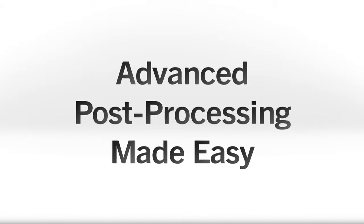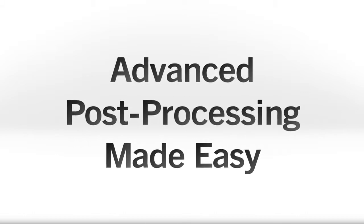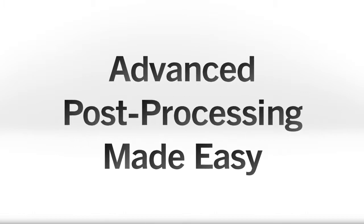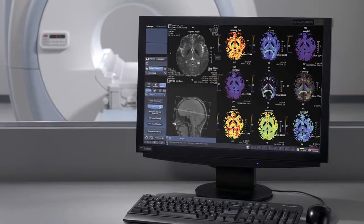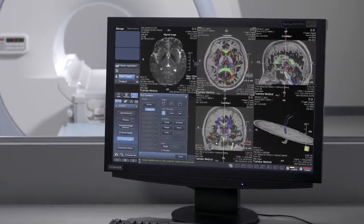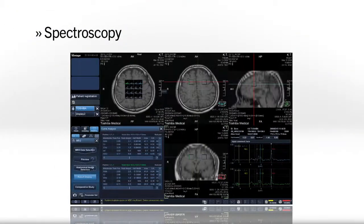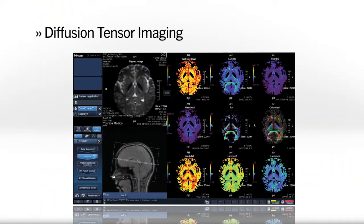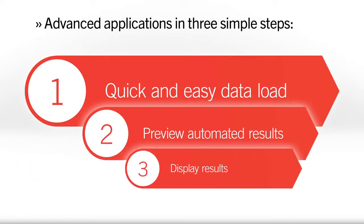mPower makes advanced post-processing simple and, depending on your site's needs, applications can be added as your clinical practice grows. Some of the important MR applications available with mPower include fMRI, spectroscopy, diffusion tensor imaging and tractography, which can all be accessed on the main console using a simple three-step process.